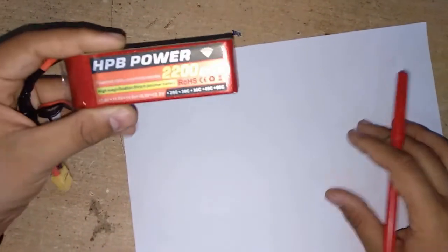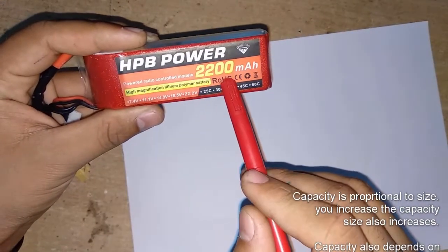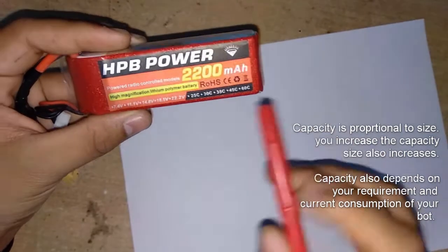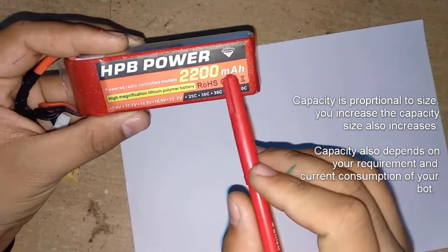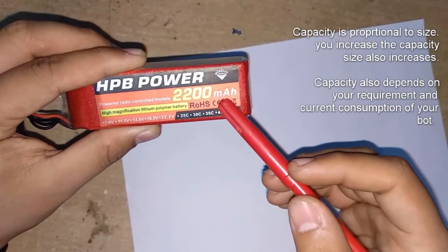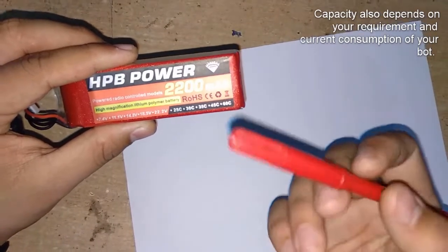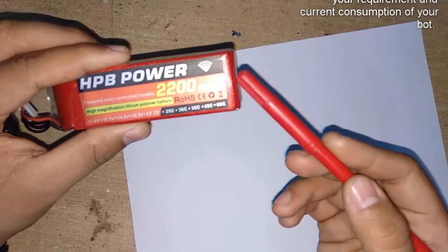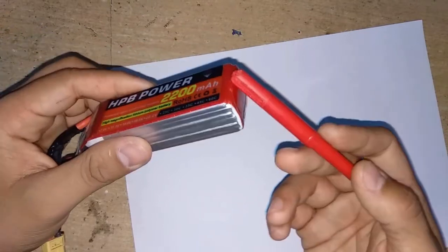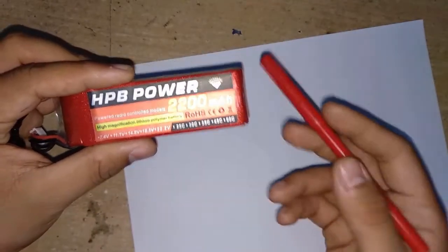First and foremost, you'll see this biggest number which in this particular battery says 2200 mAh. This is basically the capacity of the battery, which is 2200 mAh or 2.2 ampere hour. What that means is that if I pull around 2.2 ampere of current from this battery when it's fully charged, this battery will last about one hour.